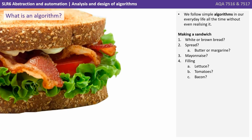We follow simple algorithms in our everyday life all the time without even realising it. When we make a sandwich we follow an algorithm, and it will be different from someone else's. Do we want white or brown bread? Or indeed a roll or a baguette?